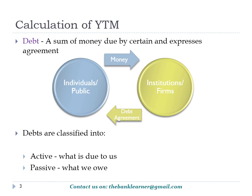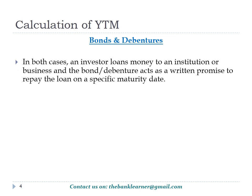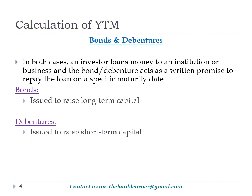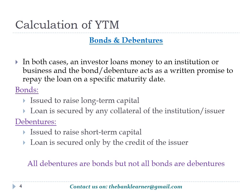Debts are usually classified as active and passive. Active debts are those which are due to us, and passive debts are those which we owe to others. Both of these agreements are used to get investments from investors for the growth of business, but both are different in nature. Bonds are issued to raise long-term capital whereas debentures are mostly used for short-term capital. In case of bonds the amount is collaterally secured, while in debentures it is secured only by the creditworthiness and reputation of the issuer. Hence, all debentures are bonds but not all bonds are debentures.